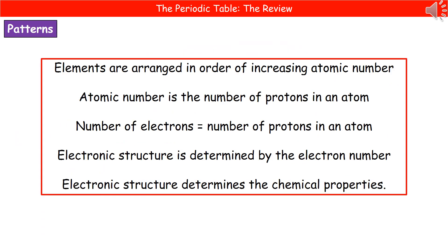When thinking about the Periodic Table, we need to remember a few key patterns. Firstly, elements are arranged in order of increasing atomic number. Secondly, the atomic number is the number of protons in an atom. The number of electrons is the same as the number of protons. The electronic structure is determined by the number of electrons, and that electronic structure then determines the chemical properties. So by arranging elements in order of increasing atomic number, we're putting them into groups that have similar chemical properties.